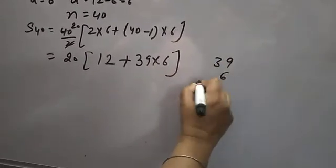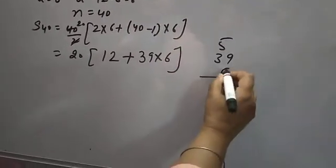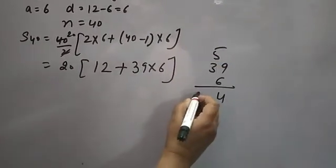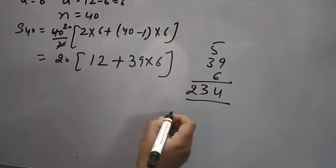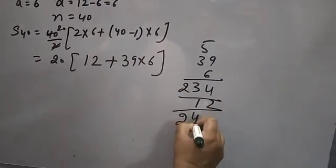39 multiplied by 6: 9 times 6 is 54, 3 times 6 is 18 plus 5 equals 23, so 234. 234 plus 12 gives us 246.